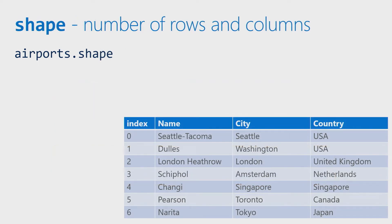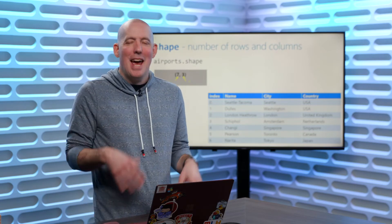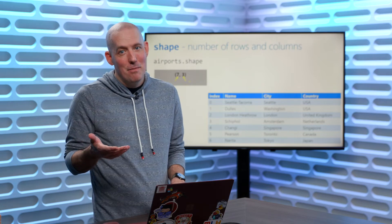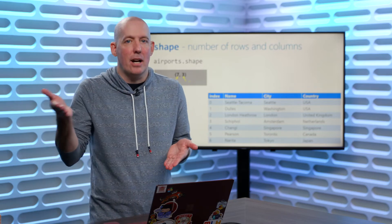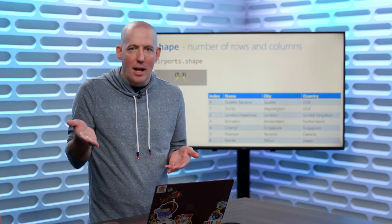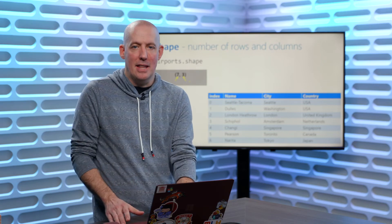We can also find out what the shape is — basically the dimensions — which gives us the number of rows and the number of columns. Looking at the output, we see seven for the number of rows and three for the number of columns. Now you might be thinking, wait a minute — I'm counting four columns because I see index, name, city, and country. You're right, but the three is indicating the number of data columns, because there will always be an index. So three is the number of data columns, and seven is the number of rows, zero through six.